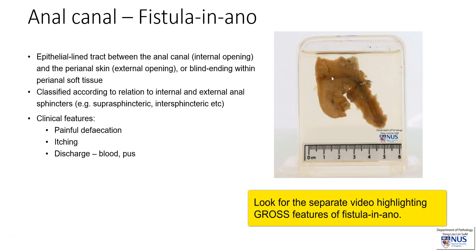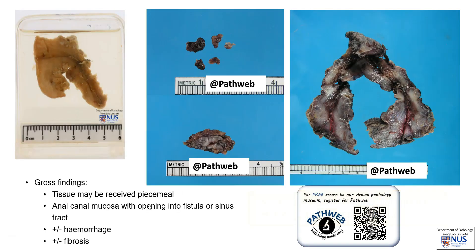This is a gross specimen showing the cut section of a fistula tract. Grossly, the tissue may sometimes be received piecemeal, but we can sometimes orientate it better and see the tract leading downwards into the deep tissue from the anal mucosa. There may be some areas of whitish fibrosis, which can feel quite firm, or some areas of reddish hemorrhage in the wall of the tract.